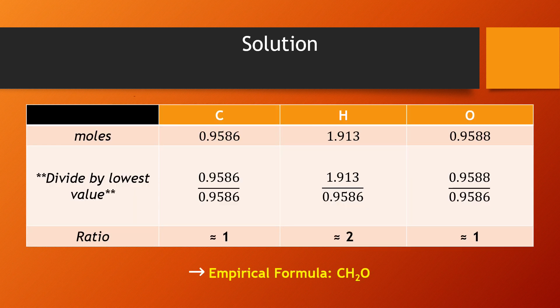After we have obtained the number of moles for carbon, hydrogen, and oxygen, we must divide the values by the lowest value to get a ratio formula. As seen in this table, carbon has the lowest value. Once we divide, we should obtain a ratio formula. In this case, it is 1, 2, 1. This therefore shows that the formula contains 1 carbon, 2 hydrogen, and 1 oxygen, resulting in the empirical formula of CH2O.